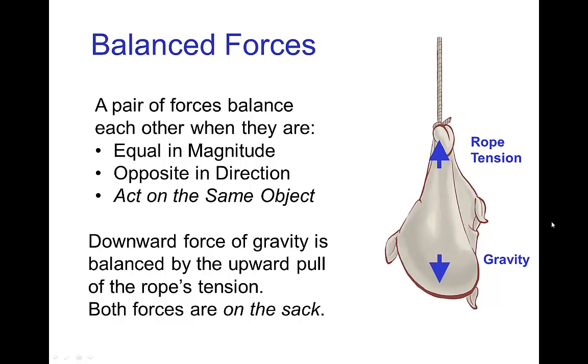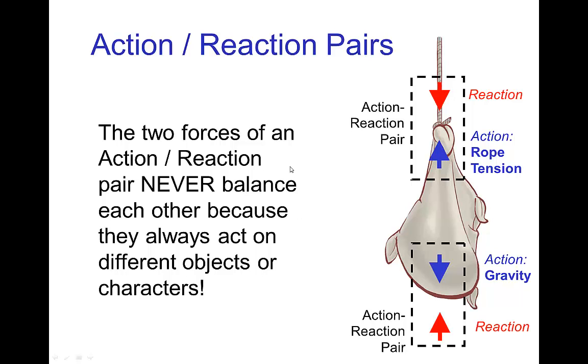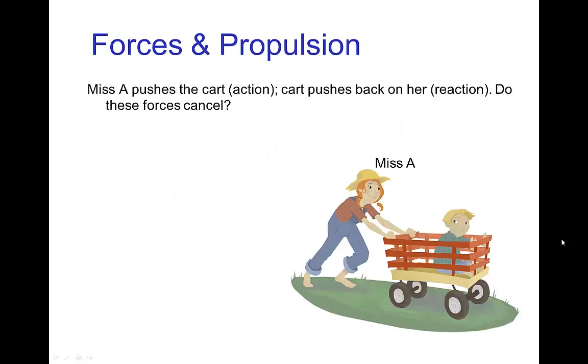You might think that this is an action-reaction pair, but that's not the case. Two forces that are part of an action-reaction pair never balance each other because an action-reaction pair, the forces are always acting on different objects or characters. Going back to that example of the sack, the tension in the rope, if that's an action force, the reaction is that the sack pulls down on the rope. The rope pulls up on the sack, the sack pulls down on the rope. The earth pulls down on the sack, the sack pulls up on the earth. So these two forces that were in balance, the tension and the gravity, are part of separate action-reaction pairs.